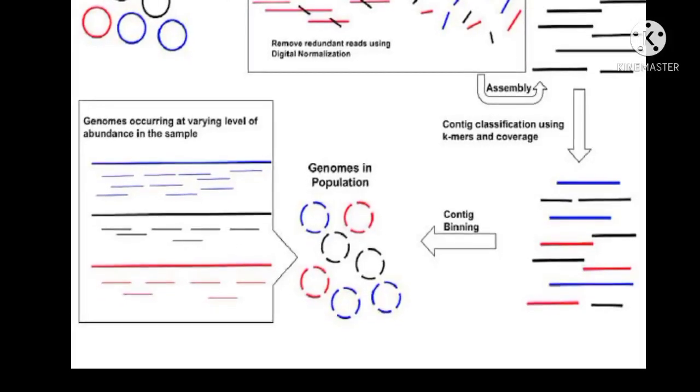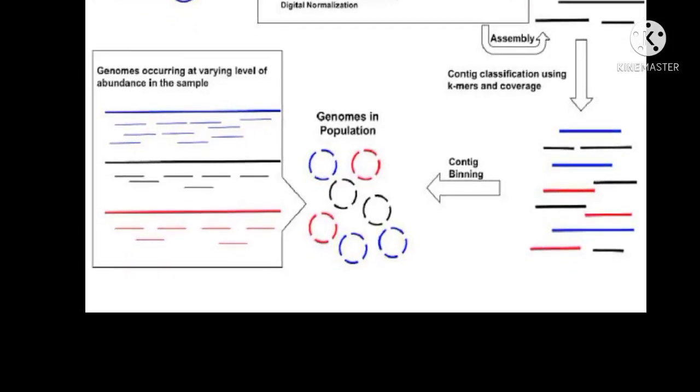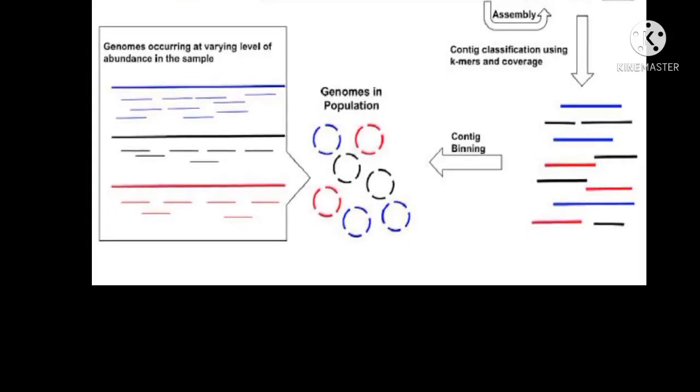Binning is the process of grouping reads or contigs into individual genomes and assigning the group into specific species, subspecies or genus.